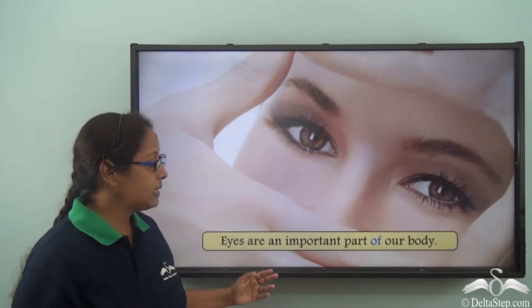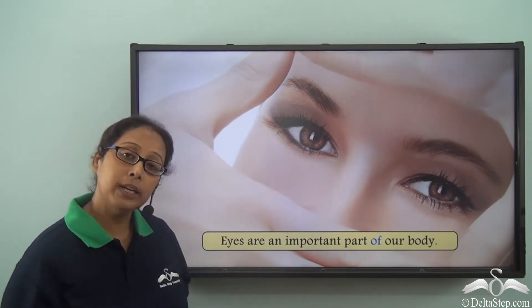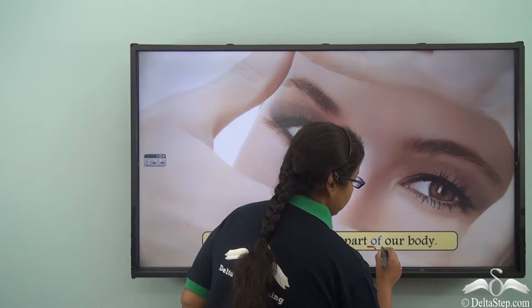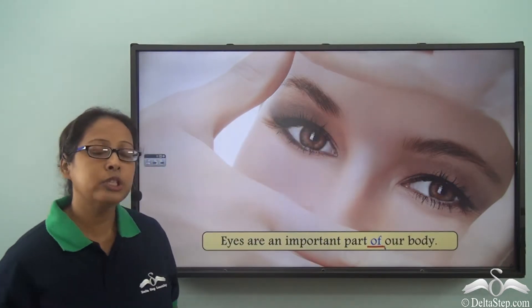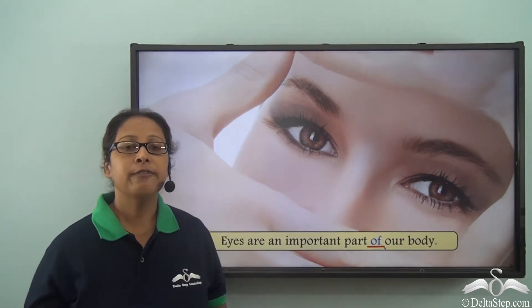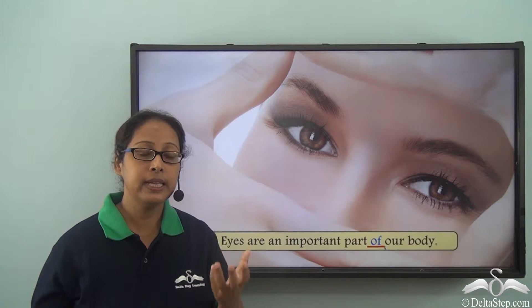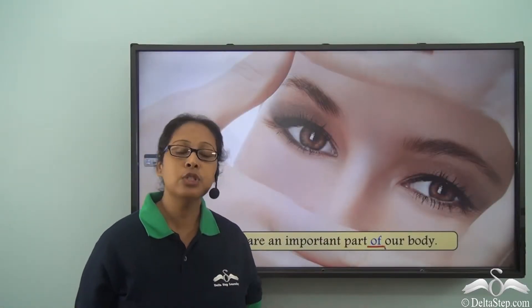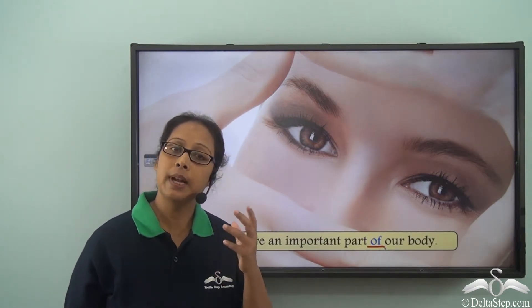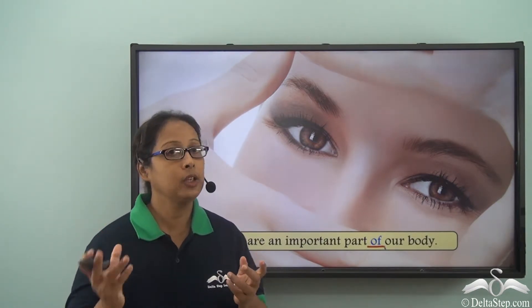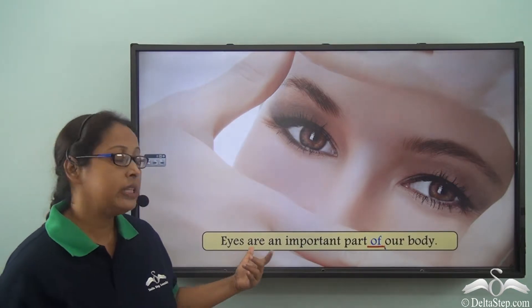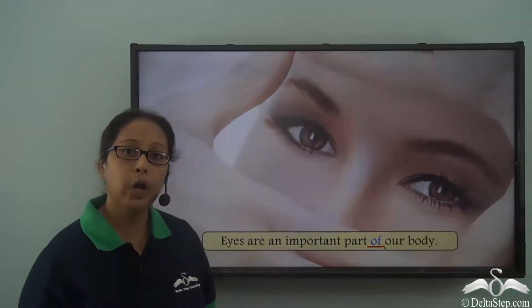Eyes are an important part of our body. So 'of' is the preposition here. When we use 'of', we mean that something is a part of the whole. So the preposition 'of' can be used to show the relation between a part and a whole — here, showing the relation between the eyes and the body.